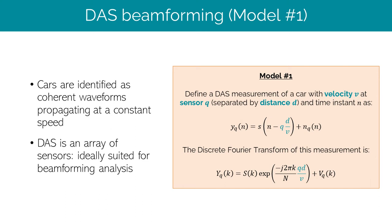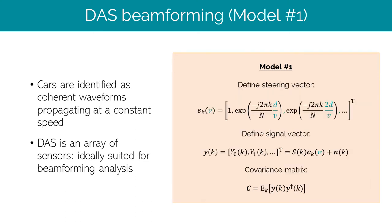The main contribution of our paper is that we propose two beamforming models. For model 1, consider a DAS measurement of a car traveling with constant velocity v. The measurement at sensor q is some characteristic signal that is translated in time according to the velocity of the car, plus some noise. When we take the Fourier transform of this measurement, this time shift becomes explicit as a phase shift. We can then define a steering vector for a set of sensors q = 0, 1, 2, etc. as a function of the velocity of the car. Likewise, we define the signal vector as the collection of measurements at q = 0, 1, 2, etc. The covariance matrix is estimated as the expectation value over the frequencies of the cross-correlation of the measurements.